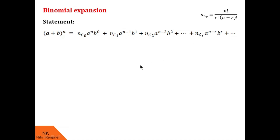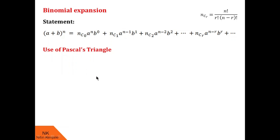Pascal's triangle will help you find these coefficients. Pascal's triangle is a pyramid of numbers. In this pyramid there is only one brick at the top, two bricks at the second layer, three bricks at the third layer, and so on. These bricks are nothing but numbers. Every layer starts with one and ends with one, and the bricks in between are obtained as the sum of the previous two bricks.